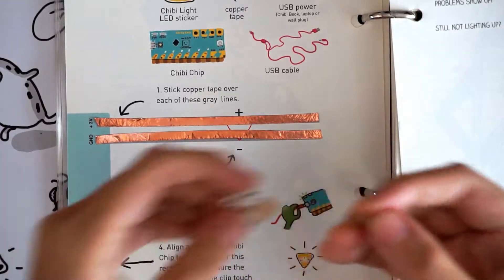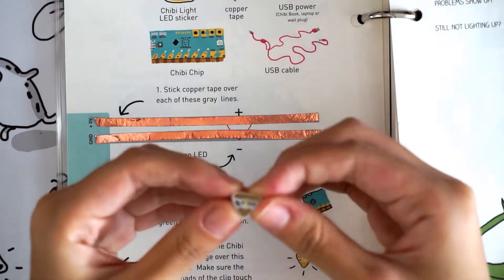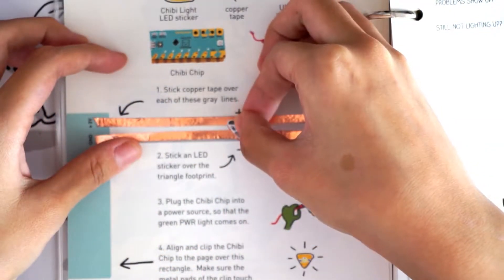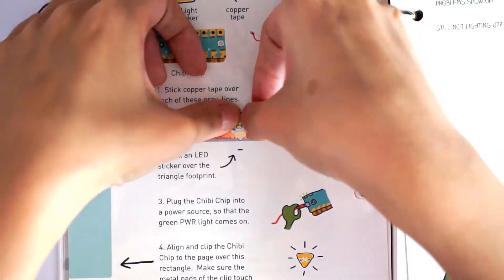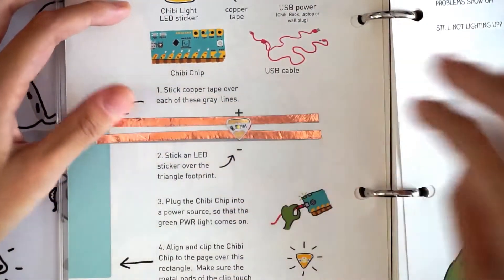Now take a cluster of white LED stickers and peel one of the stickers off. Make sure the point of the LED sticker is lined up with the red triangle on the page. Press down on the LED sticker's gold metal edges to make a strong bond with the copper tape.